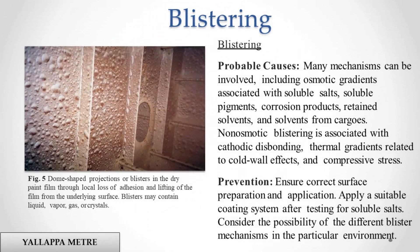Blistering. Probable causes: many mechanisms can be involved, including osmotic gradients associated with soluble salts, soluble pigments, corrosion products, retained solvents, and solvents from cargoes. Non-osmotic blistering is associated with cathodic disbonding, thermal gradients related to cold wall effects, and compressive stress. Prevention: ensure correct surface preparation and application. Apply a suitable coating system after testing for soluble salts. Consider the possibility of the different blister mechanisms in the particular environment.